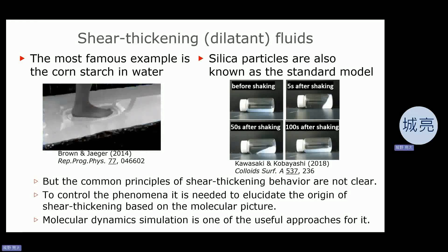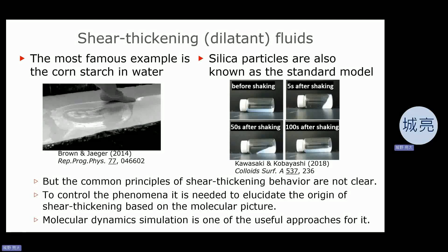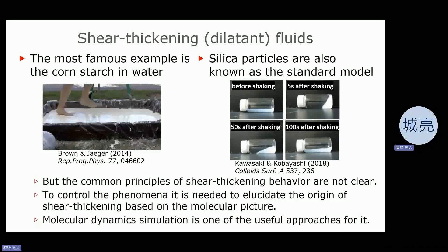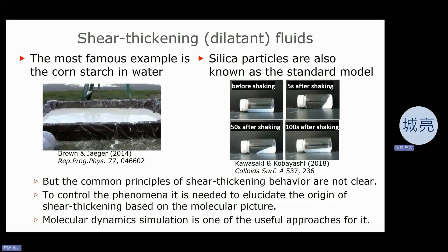A shear thickening fluid, also called a dilatant fluid, is a non-Newtonian fluid. The shear viscosity increases when shear stress is applied. This behavior is usually not observed in pure materials, but can occur in a certain kind of suspension. This can be seen with the mixture of cornstarch and water. It reacts in counterintuitive ways when one makes an impact against the surface.